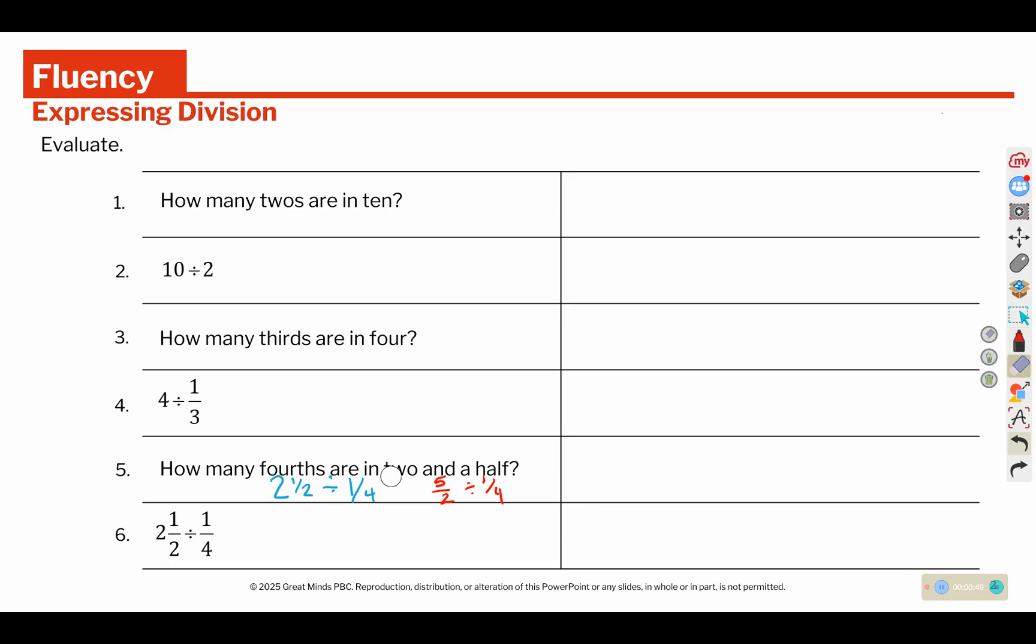But then we're going to want to change that division problem into multiplication. So we will leave, change, and change the second fraction by flipping it over. Five times four is twenty on the top. Two times one is two on the bottom. And two fits into twenty exactly ten times.